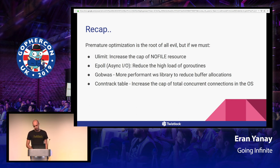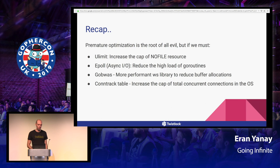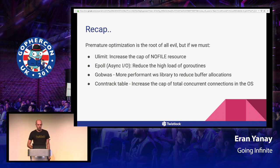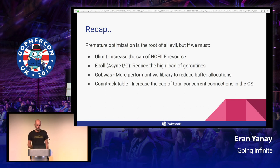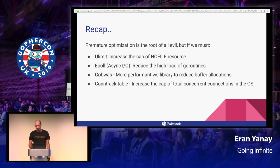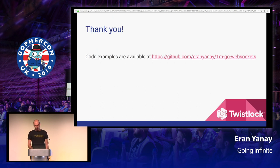Just to recap: first, we used ulimit to increase the cap of the NOFILE resource — the number of open files. We then reached over 1,000 connections. We then used ePoll to do async I/O and reduce the high goroutine load. We then switched to gobwas to have a more performant library that reduces buffer allocations. And lastly, we modified the conntrack table to increase the cap of total concurrent connections in the operating system. That's it. Thank you.